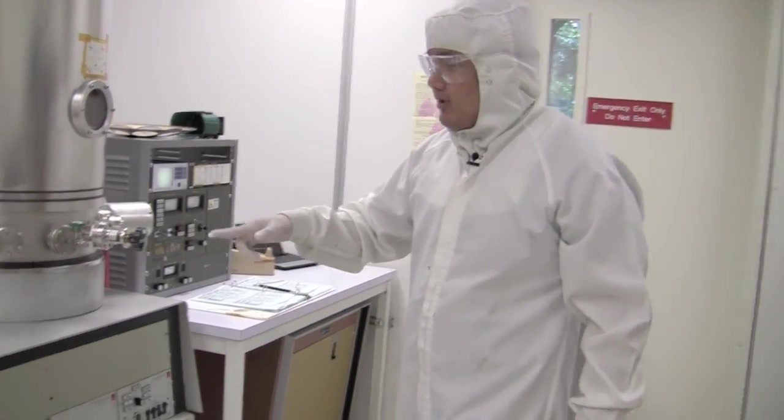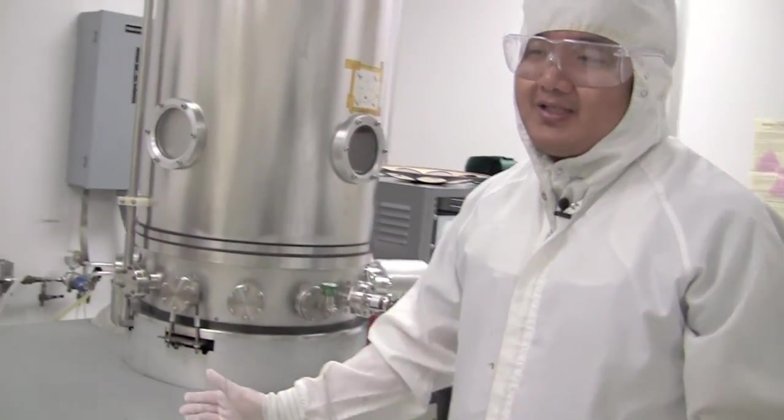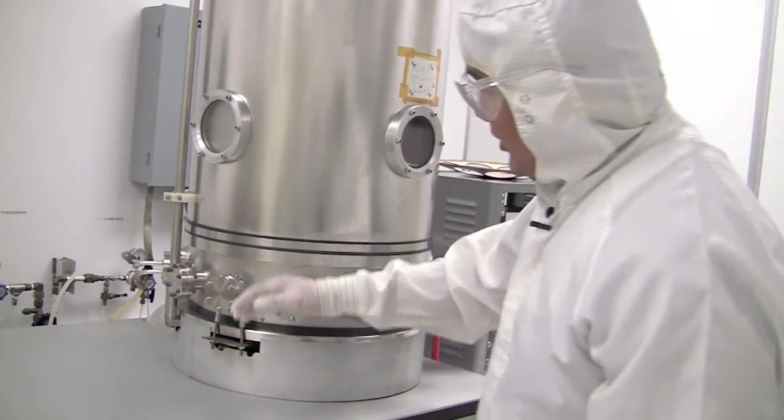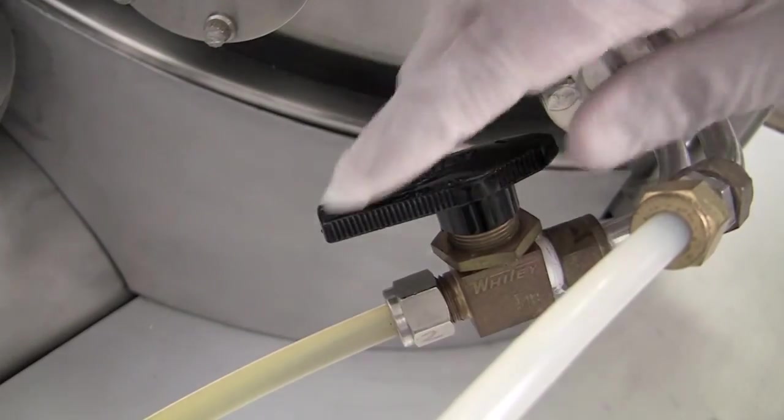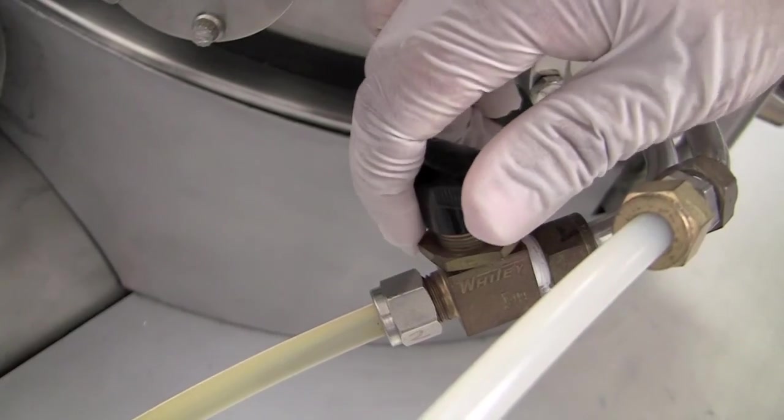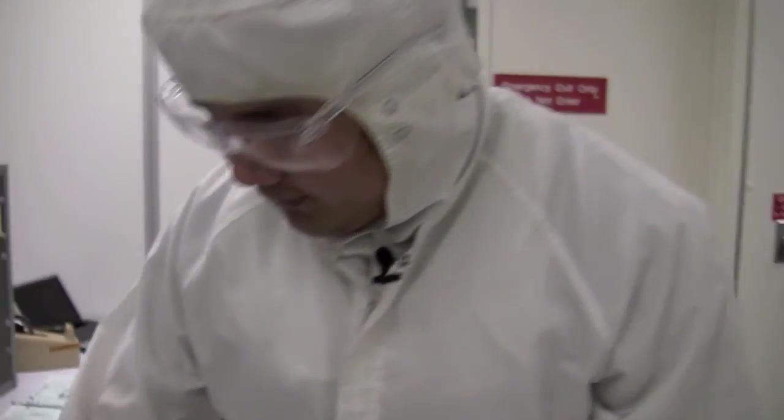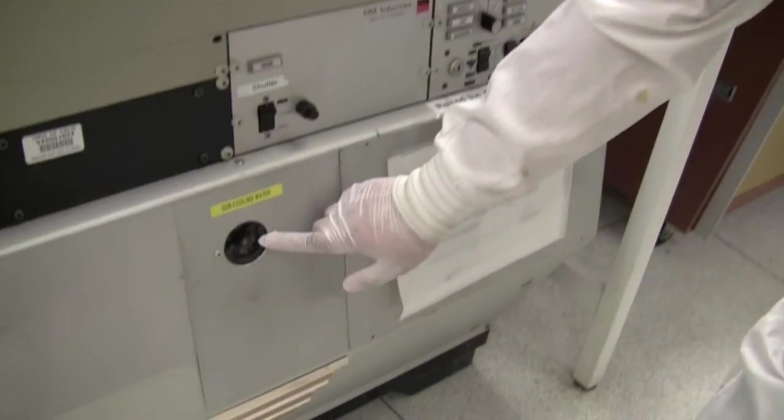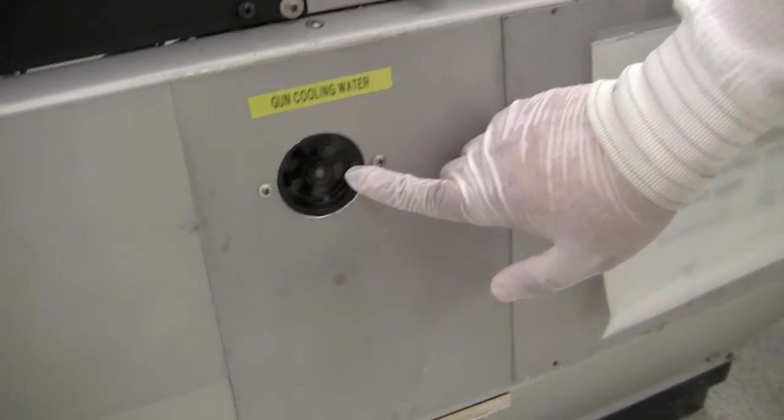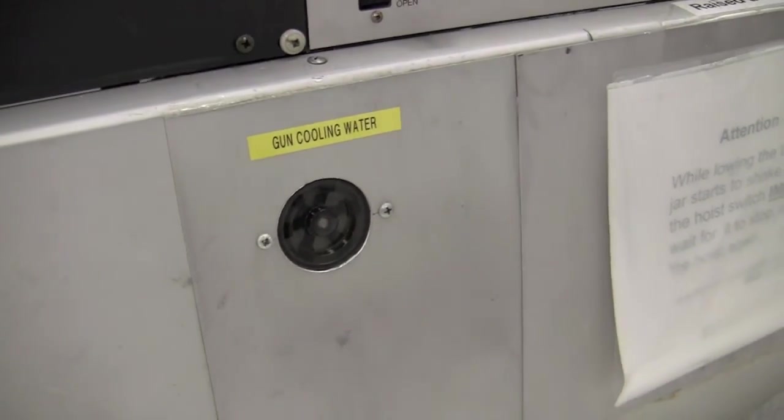Now that the system is cool, it's important to turn the water off before we actually open the chamber and vent it. So turning the water off is the same process as turning it on. You would just turn this knob. You would turn it to the closed position now. And you can verify that the wheel is not spinning.